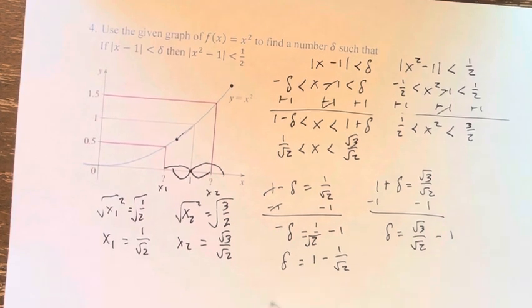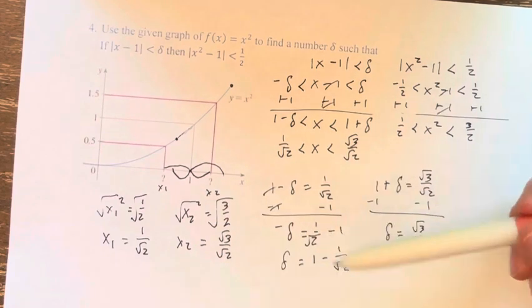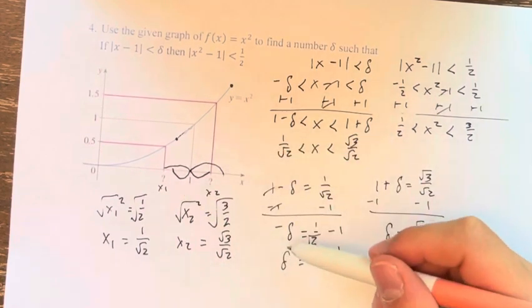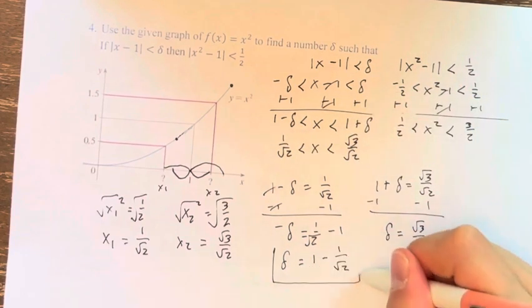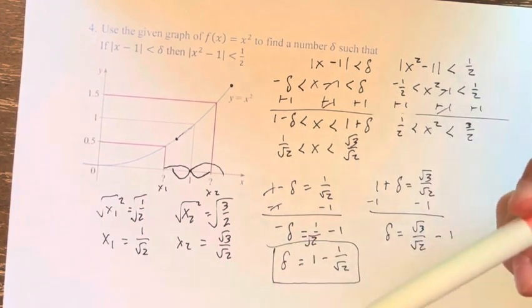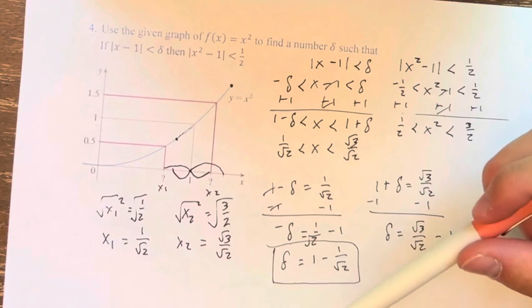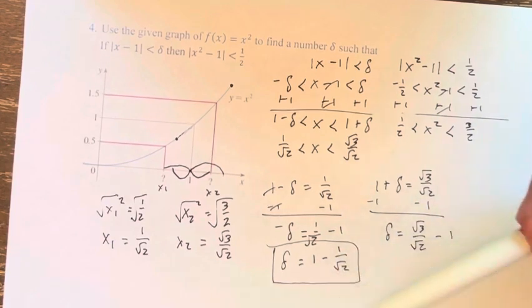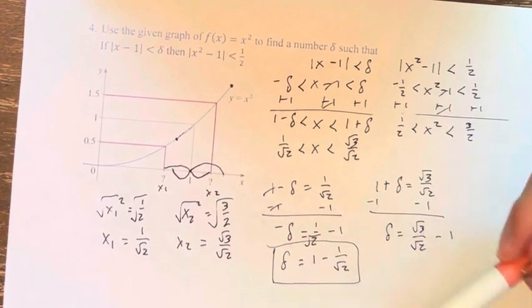So the smaller of these two, which we can just assume from graphically because I don't have a calculator in front of me, is the lower value. Plug it into your calculator to be sure, but we can assume that this is the more restrictive amount for the actual value of delta that we can choose.